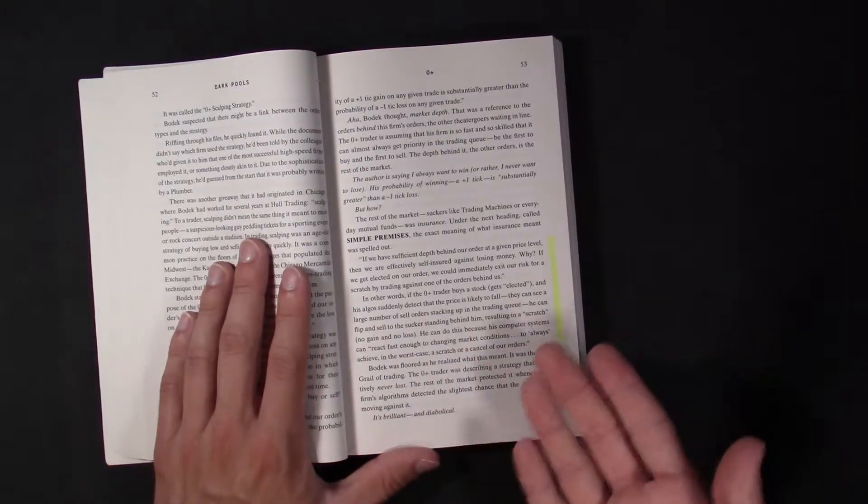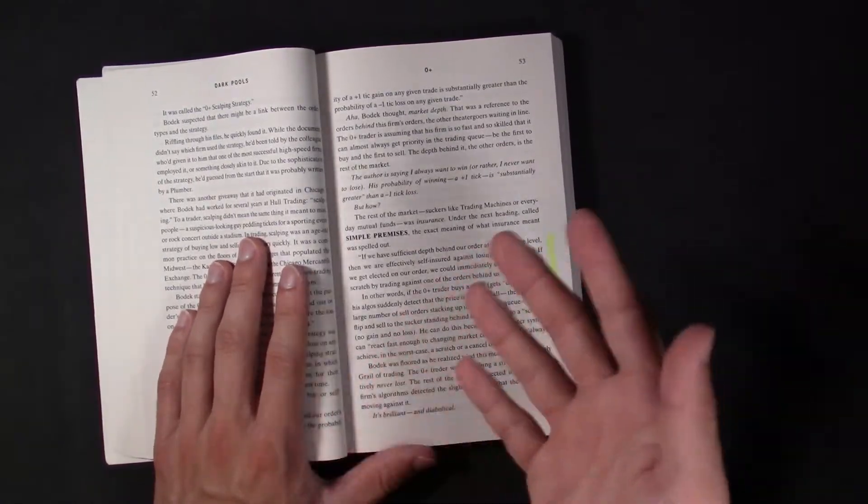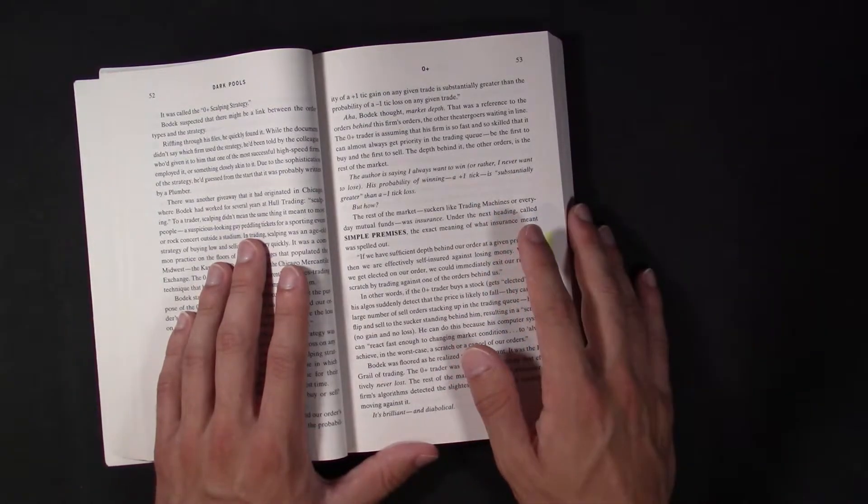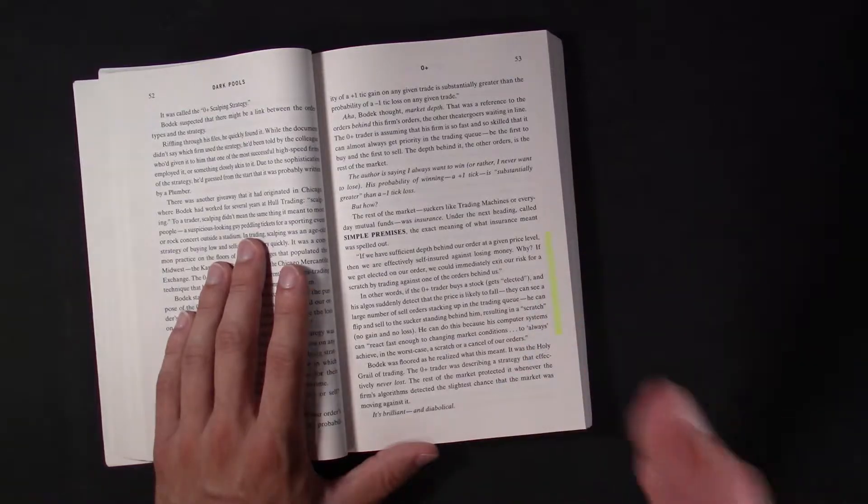If you're scalping, or day trading, or trying to catch the bid and sell, or bid and ask on a level two, you're just not fast enough. You're not. These things operate millions of a second. It's too fast.